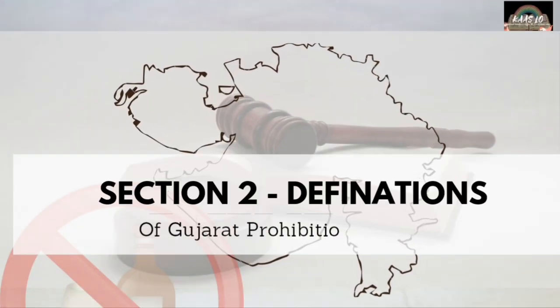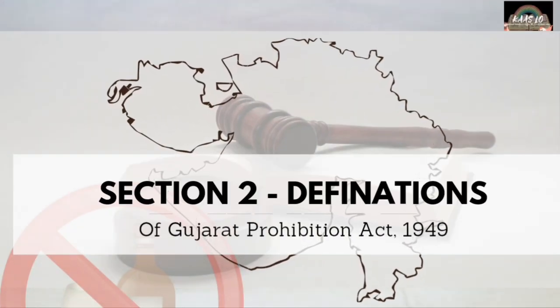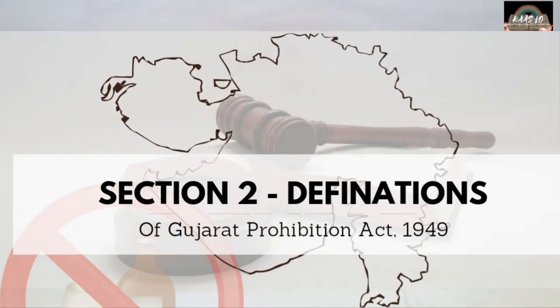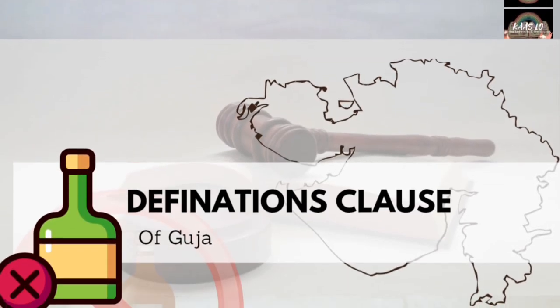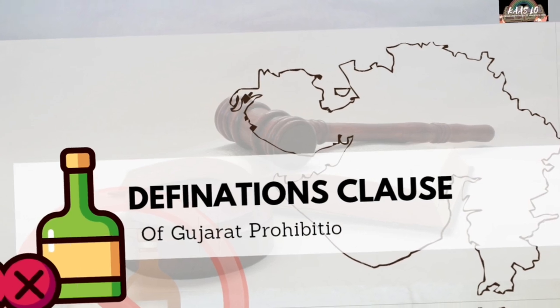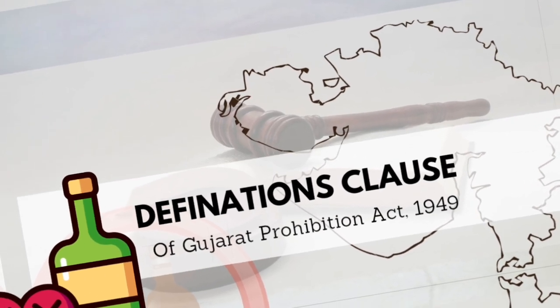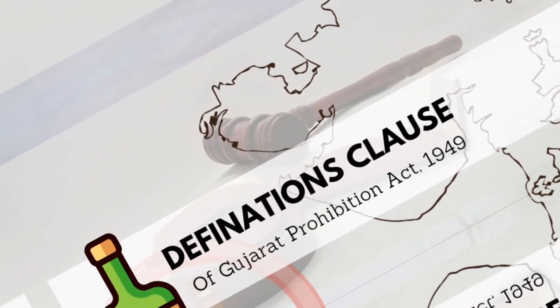In this video, we will be discussing Section 2, which is the definition clause of the Gujarat Prohibition Act 1949.